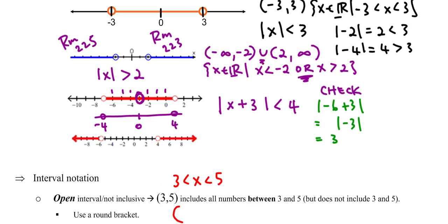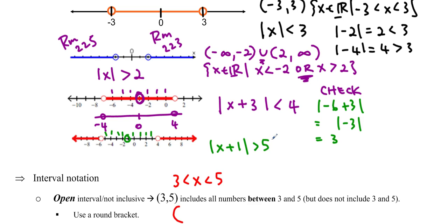For the last question with the number line going from −6 to 4, I count inward to find the center at −1, and it goes out 5 units. Moving left by 1 gives absolute value of (x + 1) greater than 5.